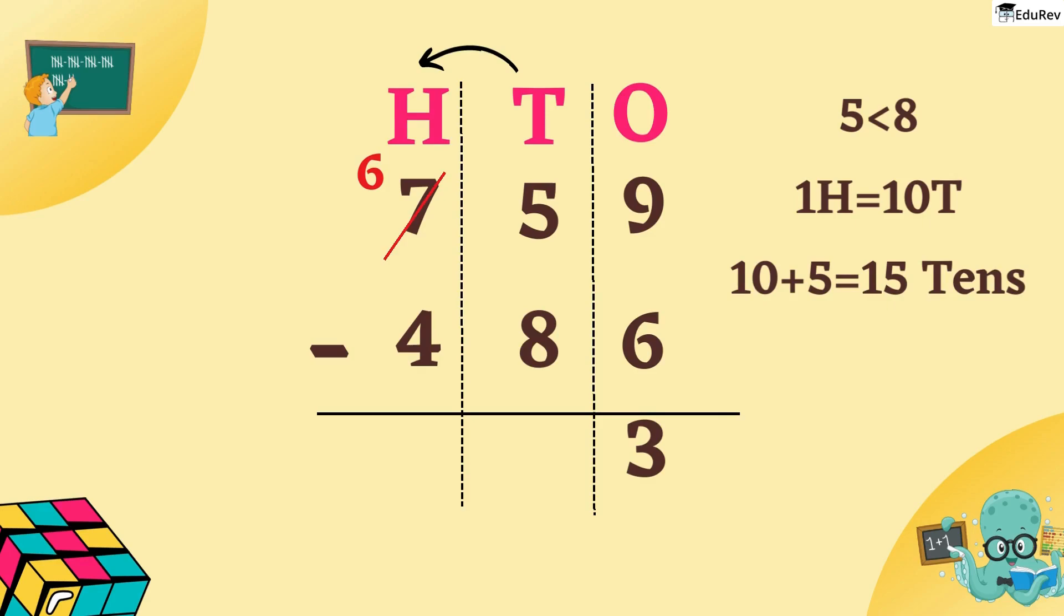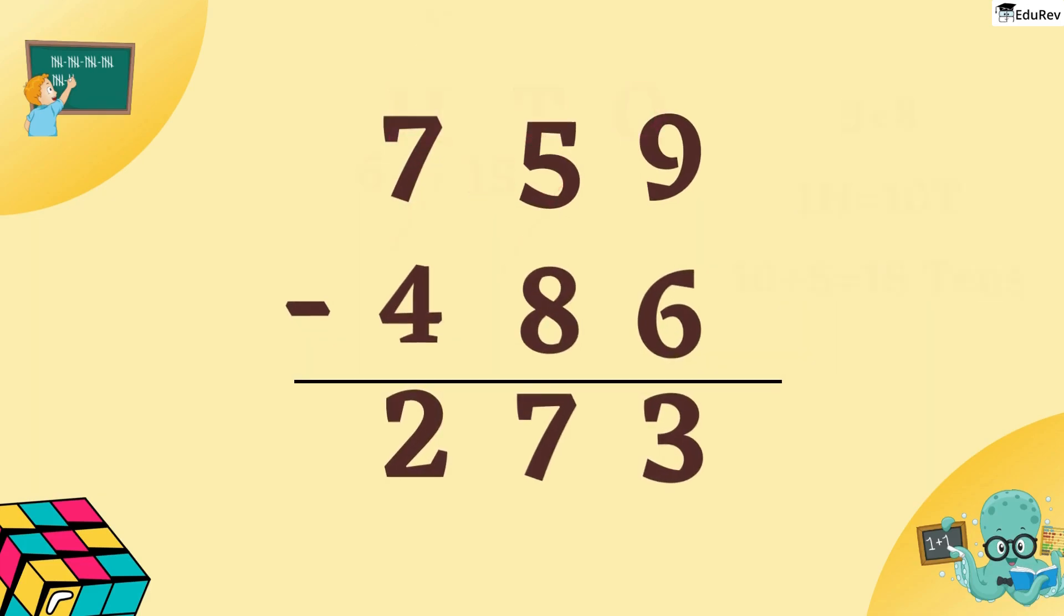In 10s place, we cut 5 and write 15 above it. So, 15 minus 8 is equal to 7. In 100s place, we have 6 minus 4 is equal to 2. The answer we get is 273.